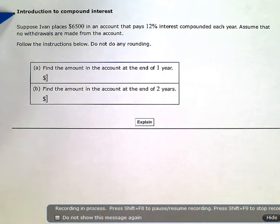Introduction to Compound Interest. Suppose Ivan places $6,500 in an account that pays 12% interest compounded each year. Assume that no withdrawals are made from the account. Follow the instructions below. Do not do any rounding.